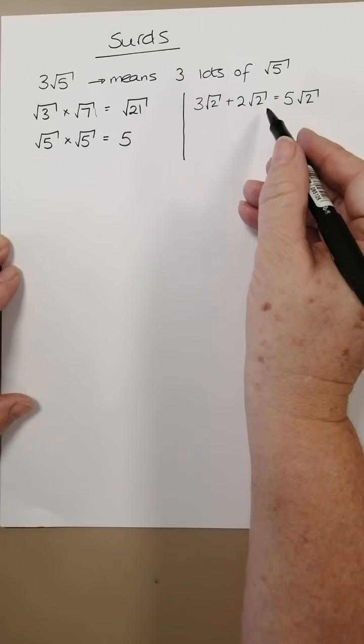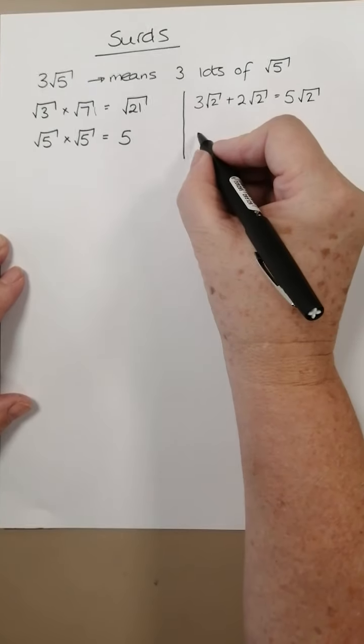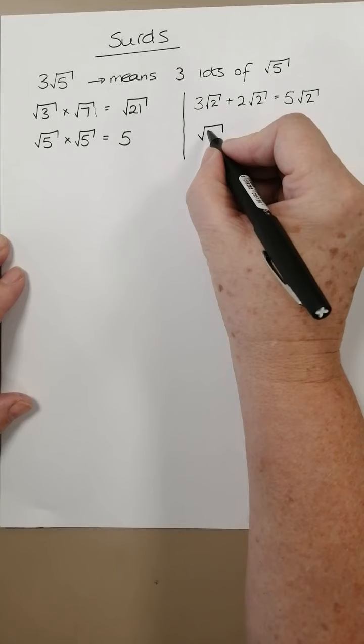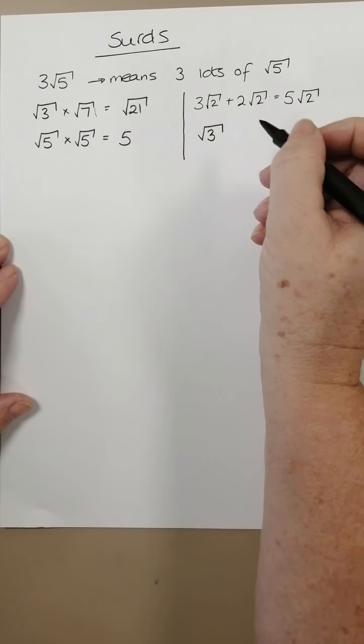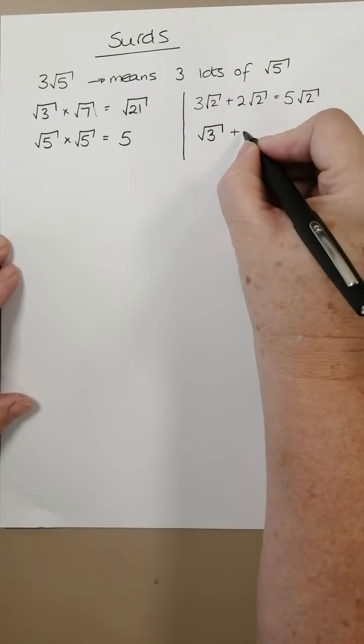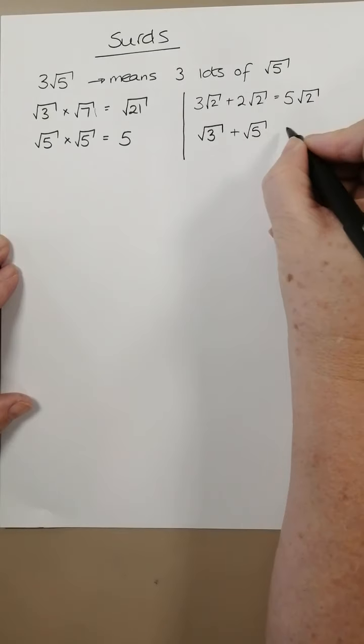If, however, the numbers underneath the square root are not the same, then often you can't simplify it unless the numbers are quite big and you've simplified them already. So root 3 plus root 5 cannot be simplified.